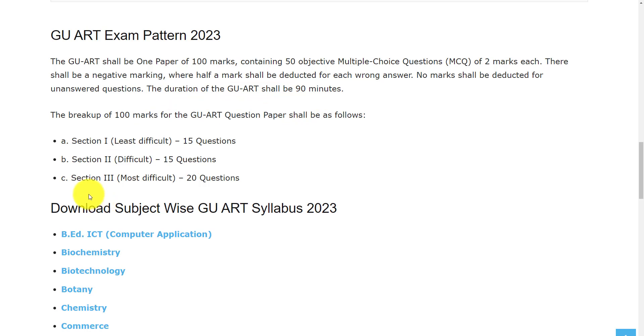The 100 marks are divided into three sections. Section 1 is least difficult with 15 questions. Section 2 is difficult with 15 questions. Section 3 is most difficult and you will get 20 questions from this section.